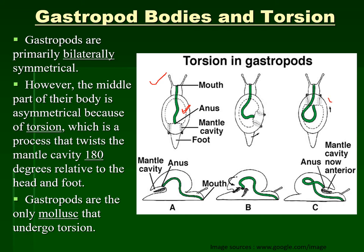When the torsion is complete, the entire soft mass including the mantle cavity, gills, and all things twist at 180 degrees relative to the head. After twisting, looking at this picture: here is the mouth before torsion, and here are the gills and anus. After torsion starts and twisting occurs, the mouth remains at its position but over the mouth — just above the mouth — occurs the mantle cavity and anus and all the organs.